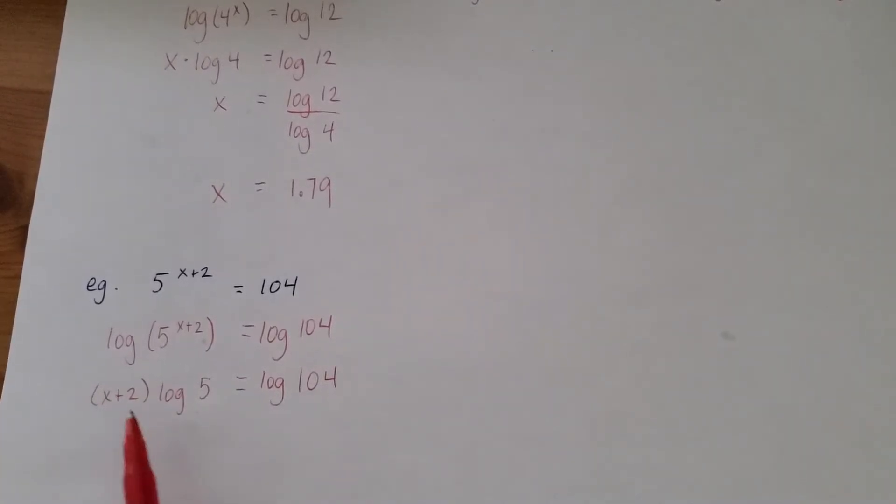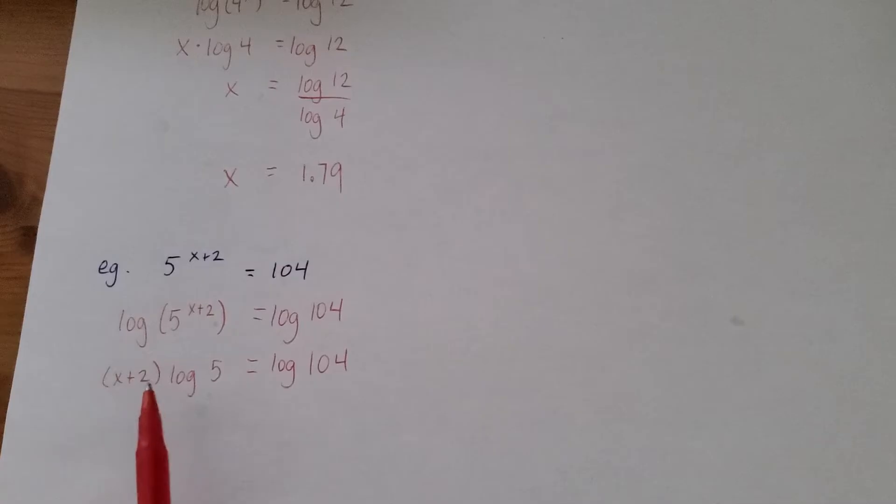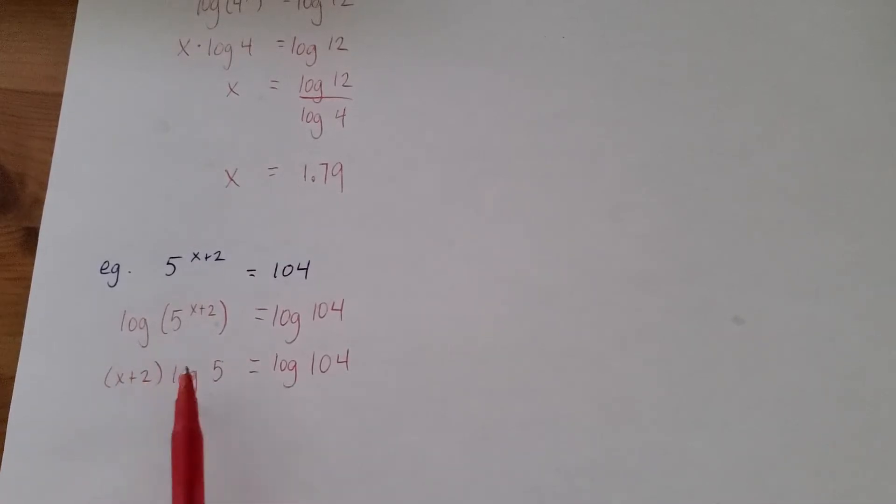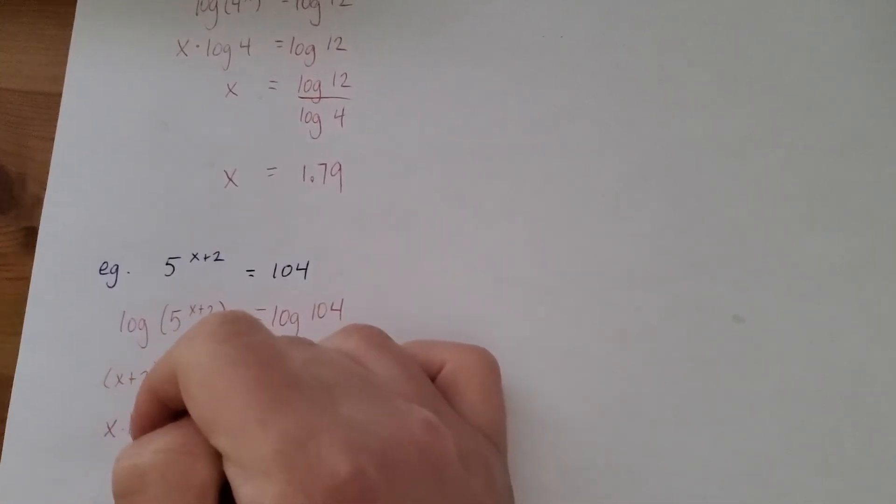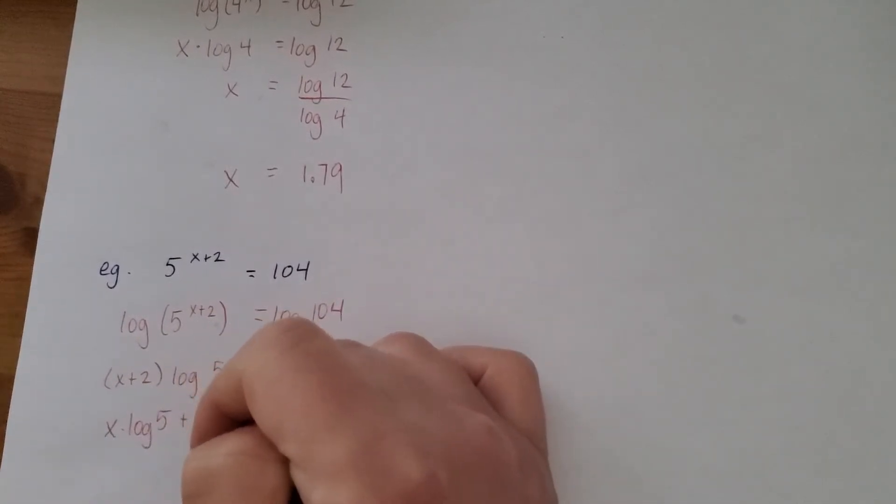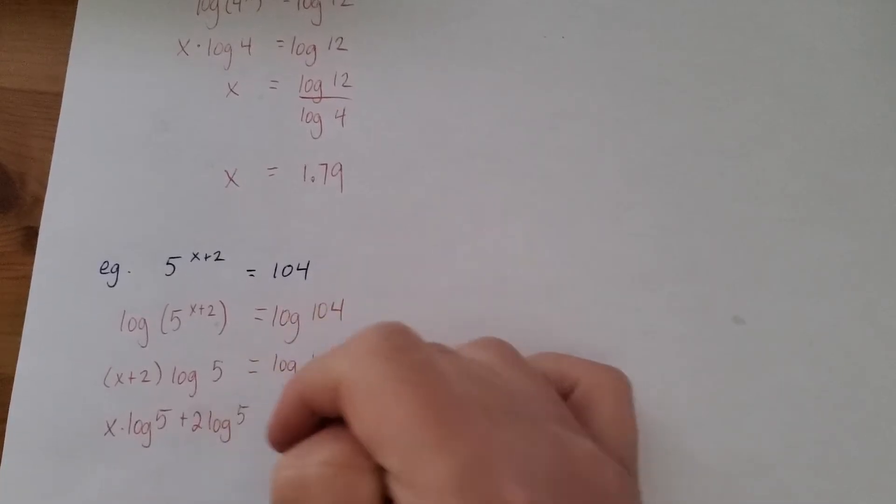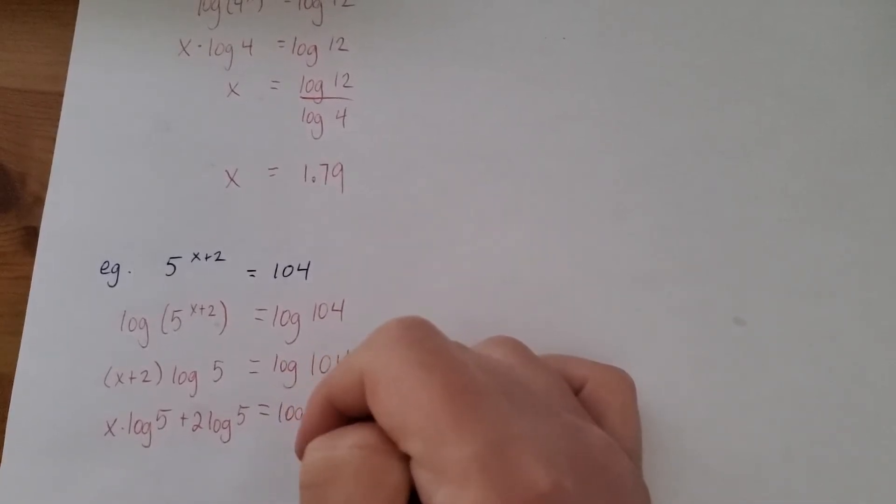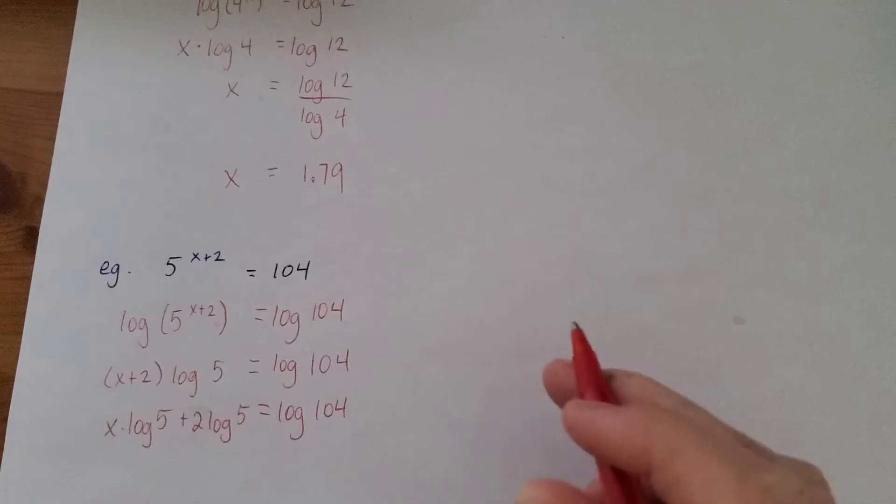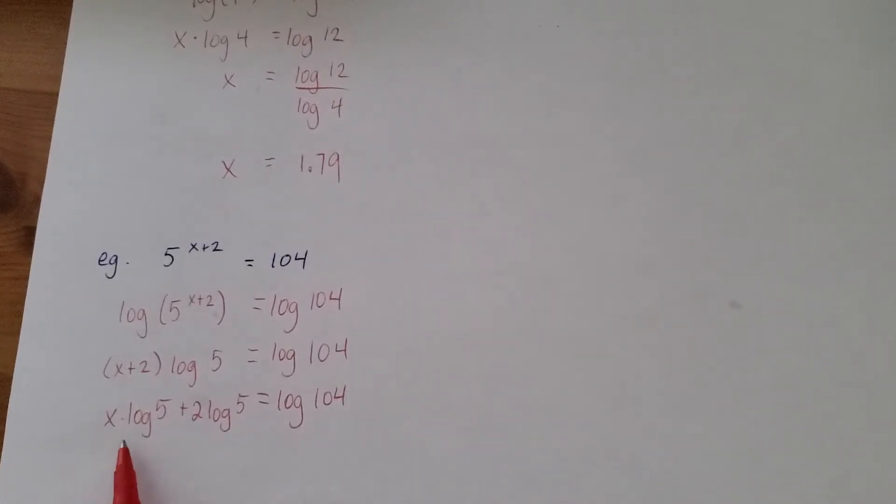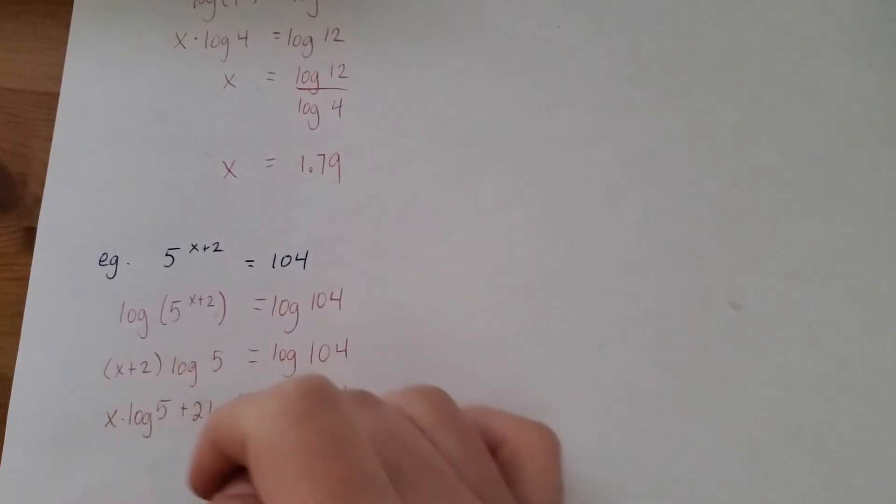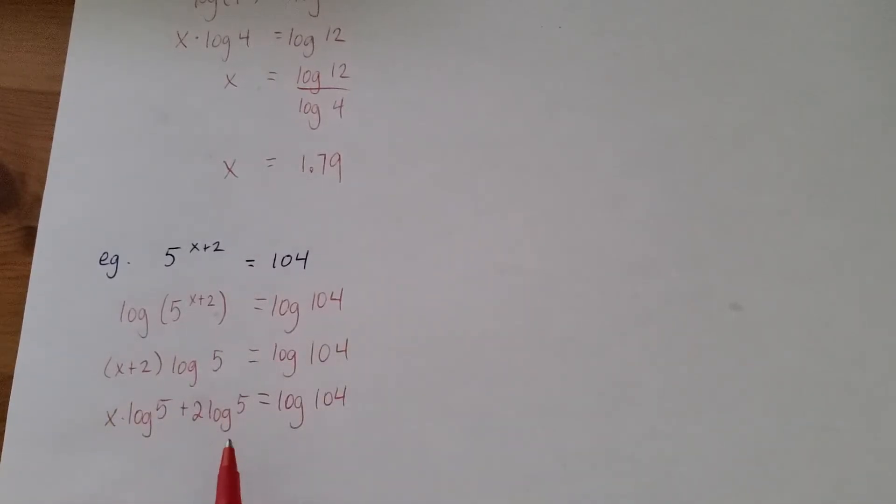I'm now going to distribute what's in this bracket. So it's x times log 5 plus 2 times log 5. We want to get x by itself. We want to get x by itself. So I'm going to subtract this term.